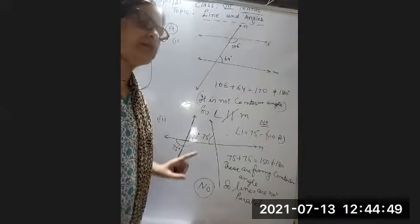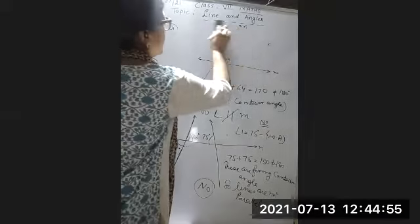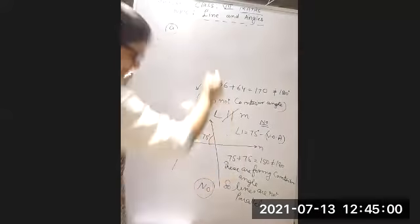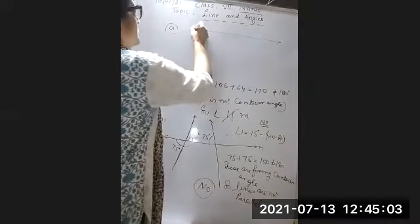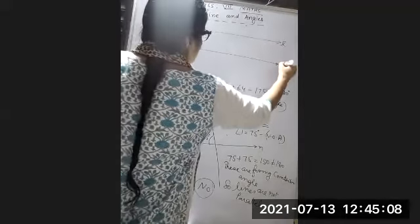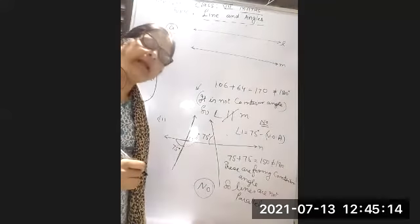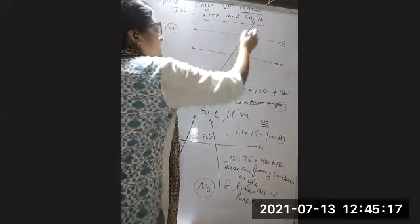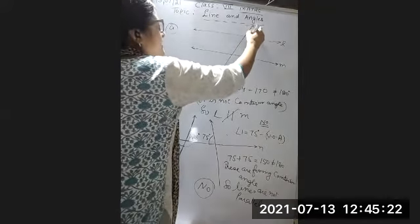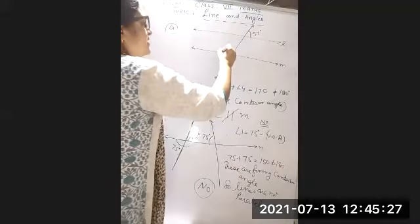Now let's look at the third figure. Note what is given: L and M are parallel with a transversal intersecting them. The angle is 57 degrees and the other angle is 123 degrees. We need to check which angle relationship makes these lines parallel.